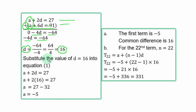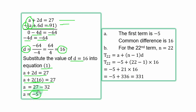To find the first term, substitute d equals 16 into equation 1. Replace d with 16: a plus 2 times 16 equals 27, so a plus 32 equals 27. Transfer 32 to the right: a equals 27 minus 32, giving the first term a equal to minus 5. The common difference is 16.